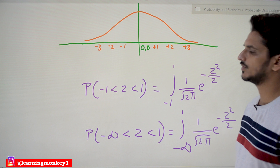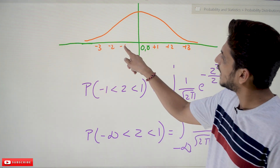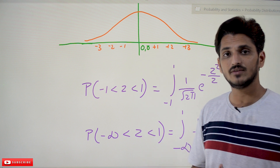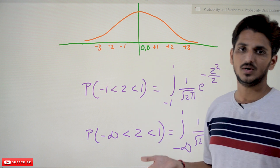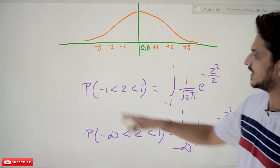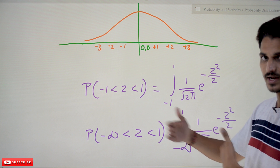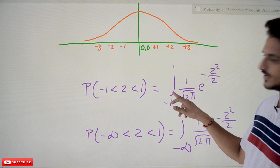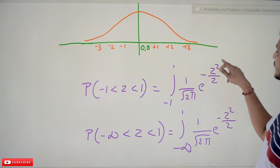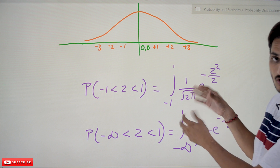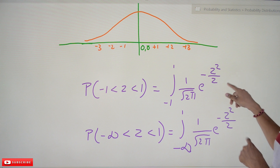Now, if someone asks you to identify the probability between −1 and 1, in continuous random variables we need to find the area under the curve — that area is the probability. So we need to identify P(−1 < Z < 1). To find this, we integrate (1/√(2π)) · e^(−z²/2) dz from −1 to 1. We substitute and differentiate to find the probability value.